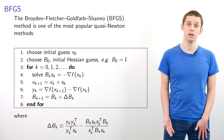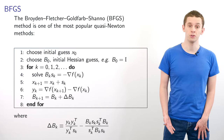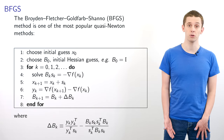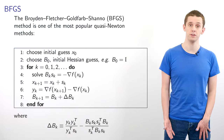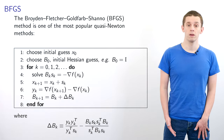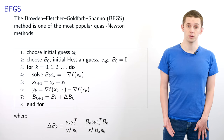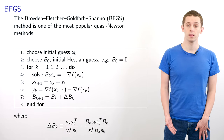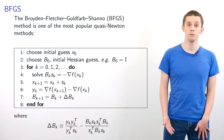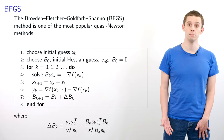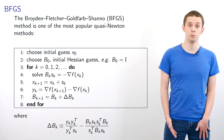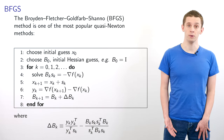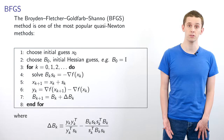We choose an initial guess x_0 and we choose B_0 to be the initial guess of our Hessian — for example, we might choose B_0 equal to the identity matrix. Then we loop over steps k from 0, 1, 2, and so on. We first solve B_k s_k equals minus grad f of x_k to find our step s_k, and we then find our updated solution x_{k+1} as equal to x_k plus s_k.